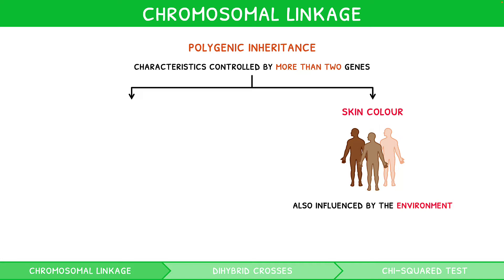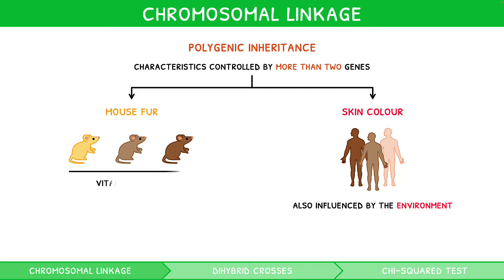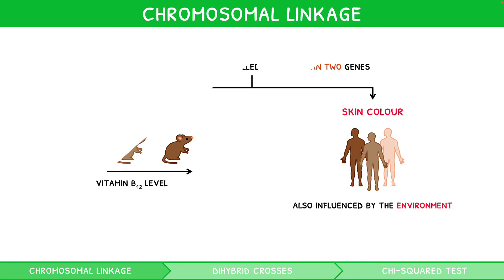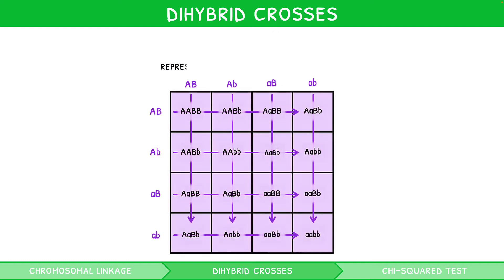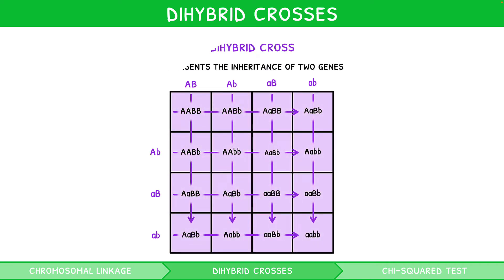A similar process occurs in mice, where different levels of nutrition can affect the colour of fur. Now that you understand genes and their linkage fully, we can learn the inheritance of two genes, and how this changes when genes are linked versus non-linked. The inheritance of two genes is represented using dihybrid crosses for both unlinked and linked genes.